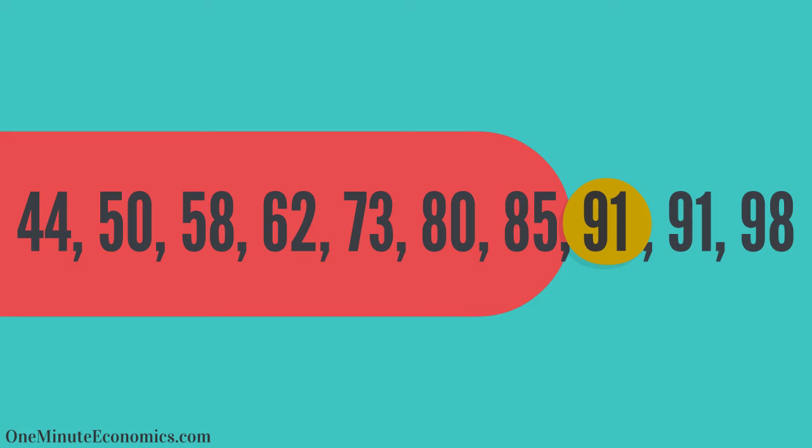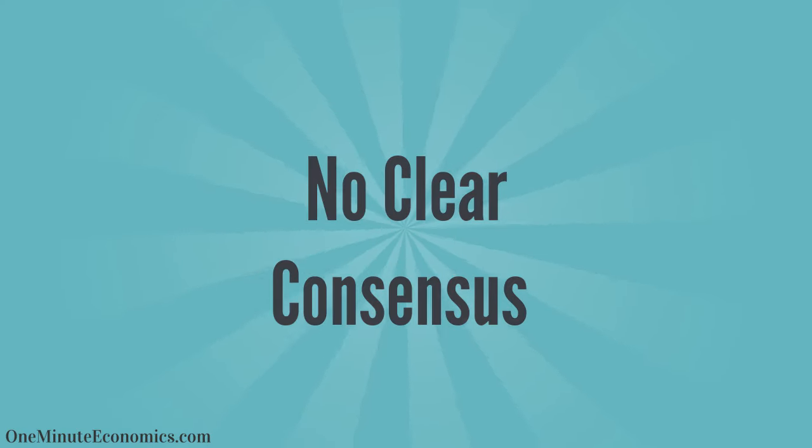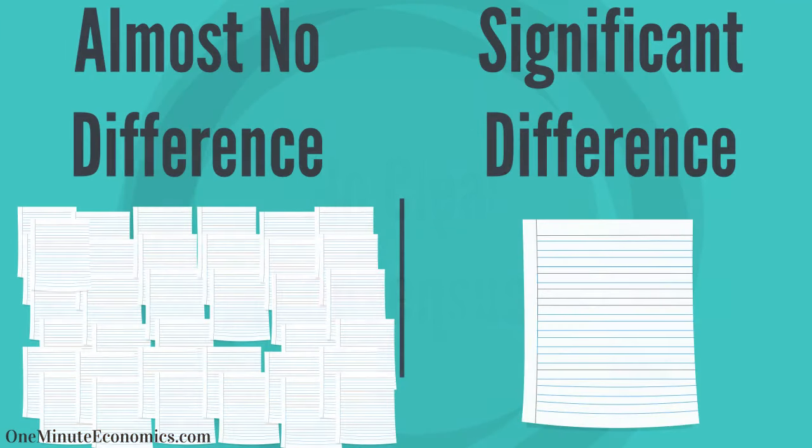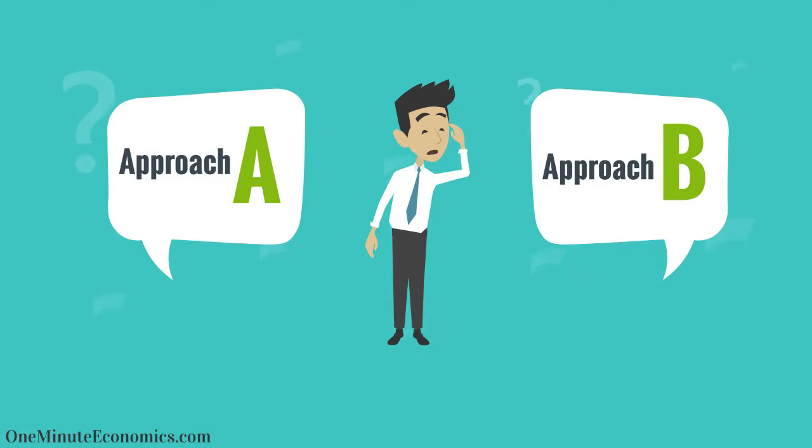Some would say you're at the 70th percentile now because only 7 scores are lower than yours, whereas others state you're still at the 80th percentile because they believe the score equal to yours should also be counted. There's no clear consensus on this, and while for large data sets it doesn't make that much of a difference, it counts for smaller data sets like ours. So, to be transparent, always state which approach you're using.